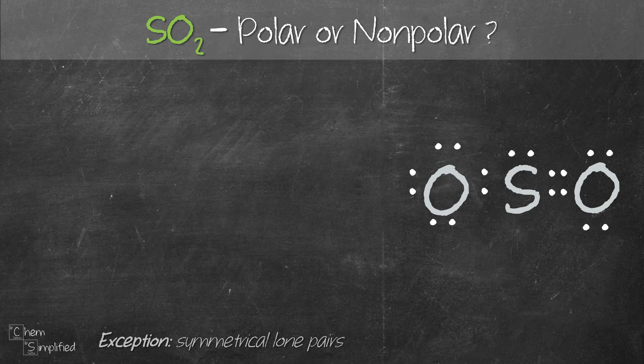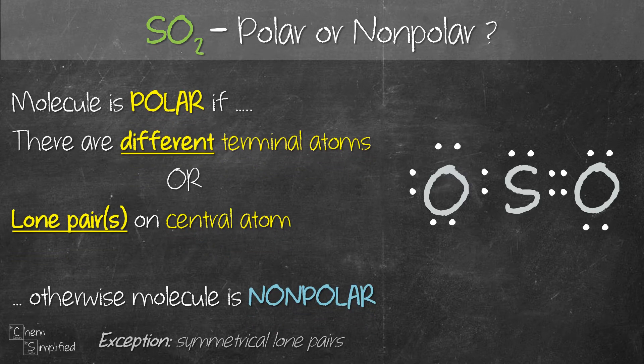We're going to find out if SO2 is polar or nonpolar. There's a simple trick we can use to figure out if a molecule is polar or not. Basically there are two criteria, and we just need to fulfill either one. The first one is having a presence of different terminal atoms, and the second one is having lone pairs on the central atom. If either one of the criteria is fulfilled, the molecule is polar.